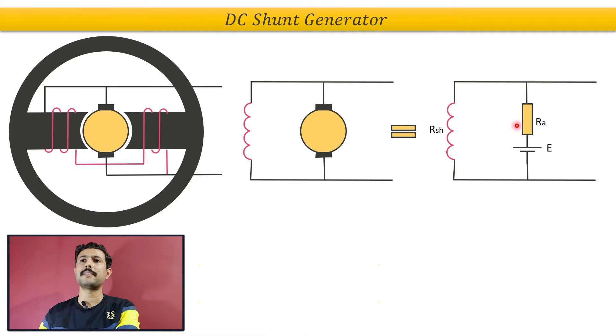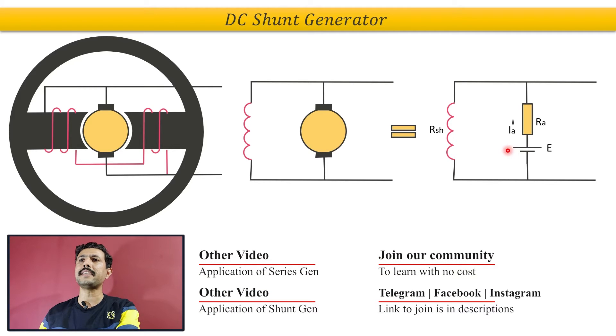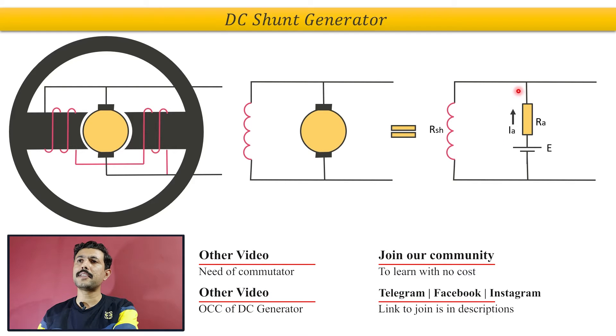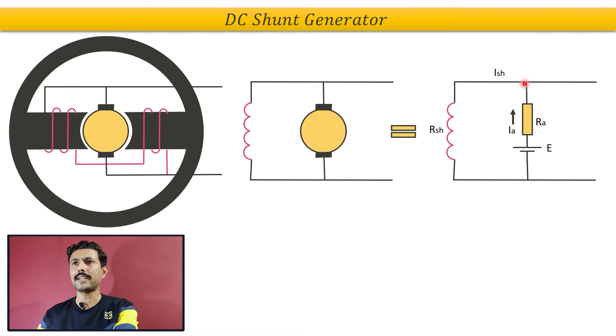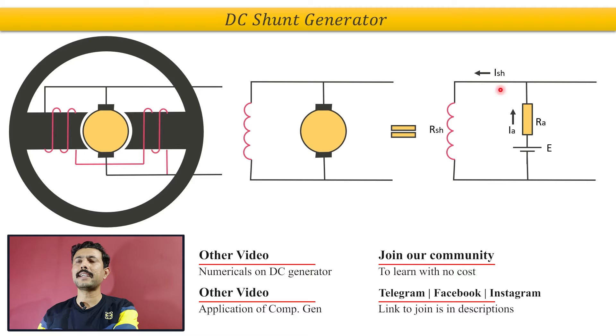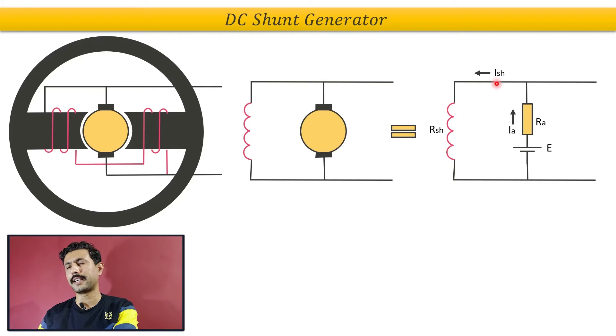Now let's see the other electrical parameters. From this battery, basically IA current flows in this upper direction. Now this IA current is divided into two parts from this junction point.